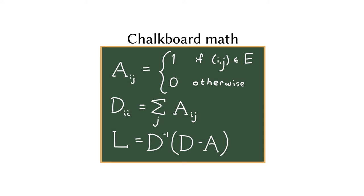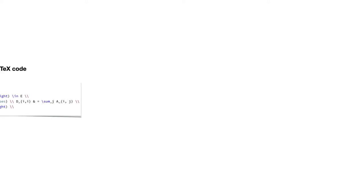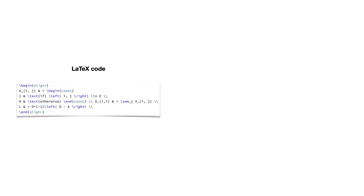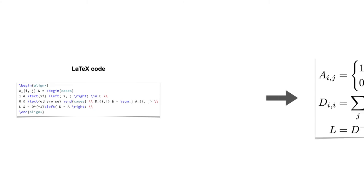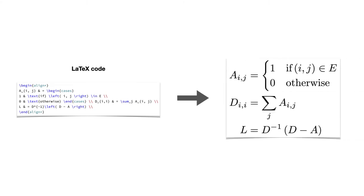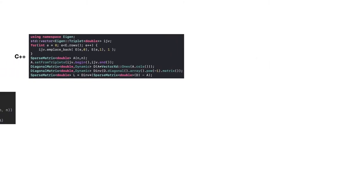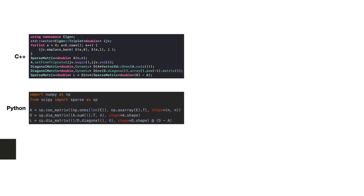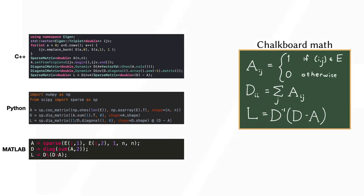Mathematicians naturally communicate linear algebra on the chalkboard, but on the computer they must choose between writing in a semantically underdefined language like LaTeX, and languages with well-defined semantics but notations that no longer resemble chalkboard math, such as C++, Python, or MATLAB.